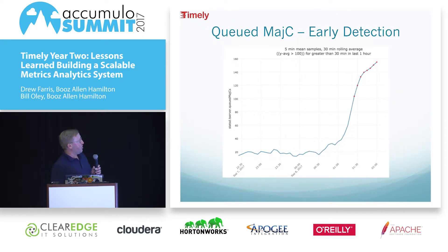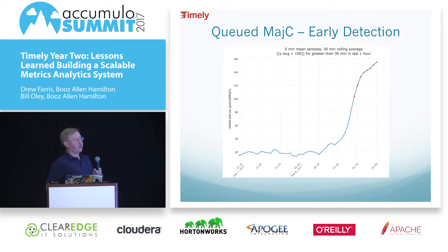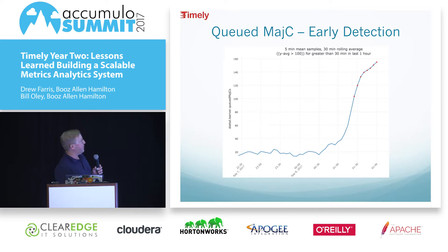This is what it looks like when you're zoomed in. By running alerts every hour via Python scripts on a cron job, you can catch it within the first 30 minutes or so of one of the alerts.